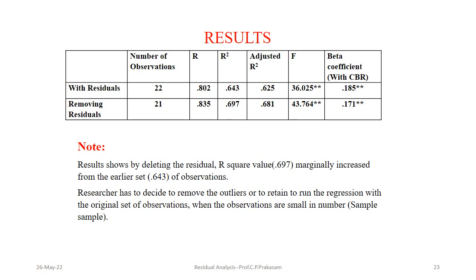The results are then compared — with residuals (22 observations) and after removing the outlier (21 observations). The R-square is 0.643 with the outlier present, and removing it gives a slight increase to 0.697. The F ratio is found to be significant, and the beta coefficient for CBR is also found to be significant. Therefore, by removing the outlier it is possible to enhance the R-square. The result shows that by deleting the outlier, the R-square values marginally increased from 0.643.